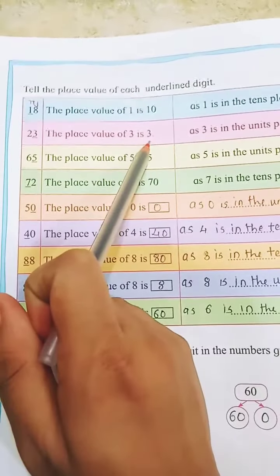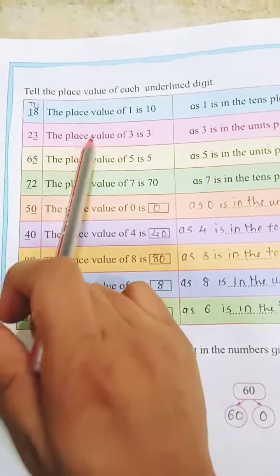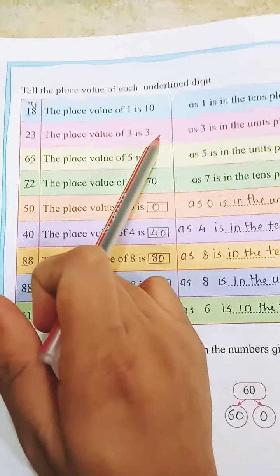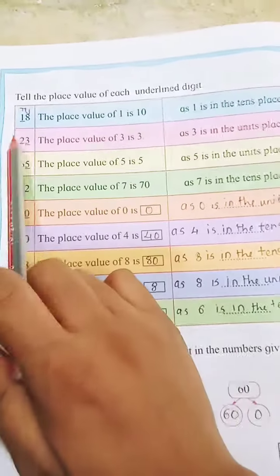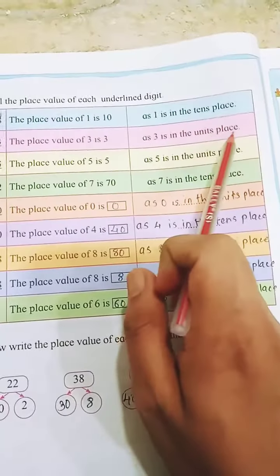Correct? The place value of 3 is 3, as 3 is at which place? Unit's place.